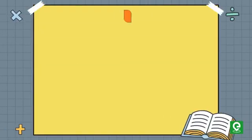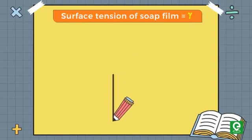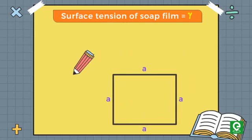Solution: We are given that the surface tension of soap film equals gamma, and the side of the square planar soap film is equal to a. Let's assume that the vertices of the square are at points A, B, C, and D.